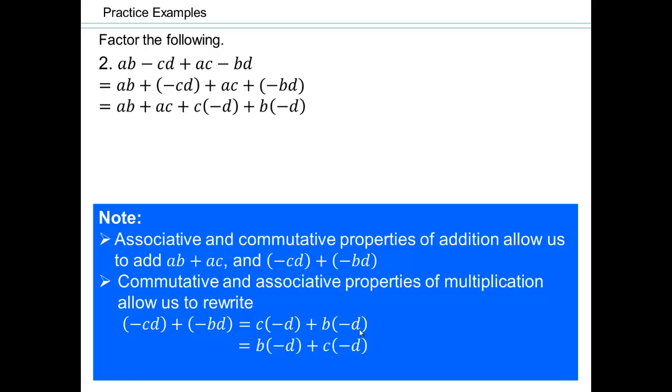Now this is important because why? Because now we can rewrite it. We can also interchange the order in which the c times negative d plus b times negative d is written. This property is what? This is the commutative property of addition. So why is that necessary? Because now look, the first two terms, greatest common factor is a. The second two terms, the greatest common factor is the negative d, which is a negative d times b plus c. And now you can see what's going to happen. You're going to have a minus d times b plus c.